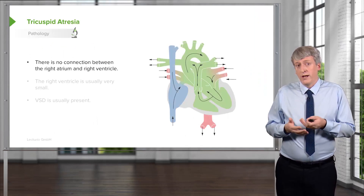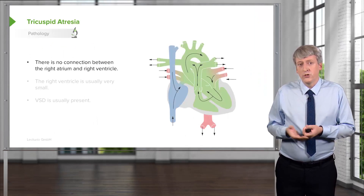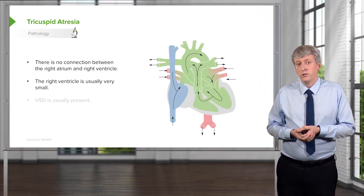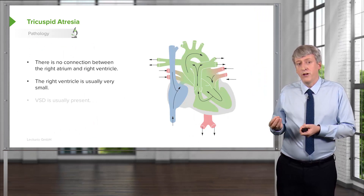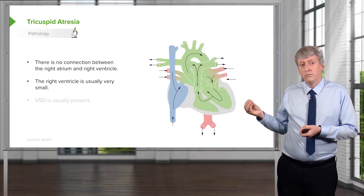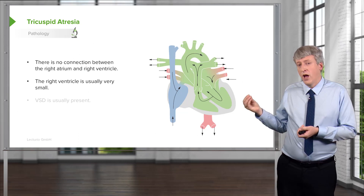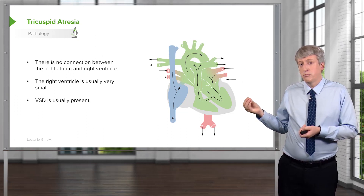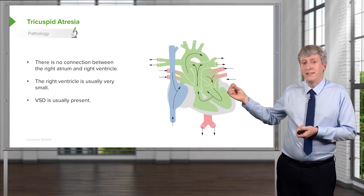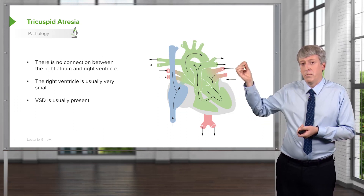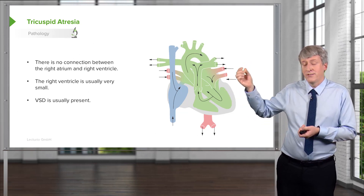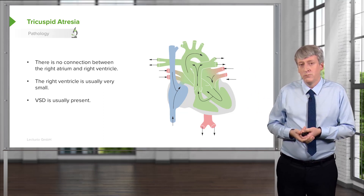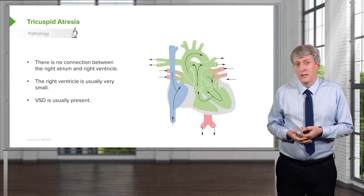Remember, with tricuspid atresia there's no connection between the right atrium and the right ventricle. The right ventricle is usually very small and not very effective. A VSD is present because otherwise the blood can't get back up into the lungs unless there's a patent ductus arteriosus, which there usually is.